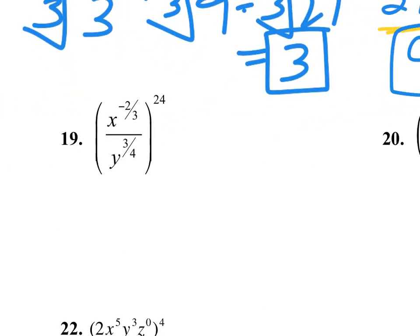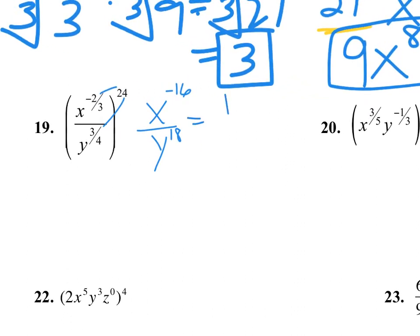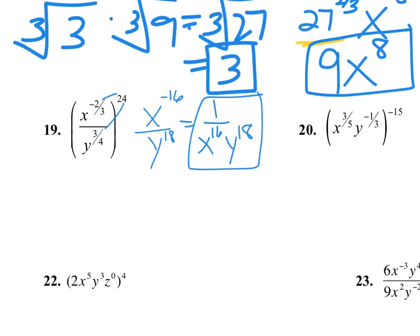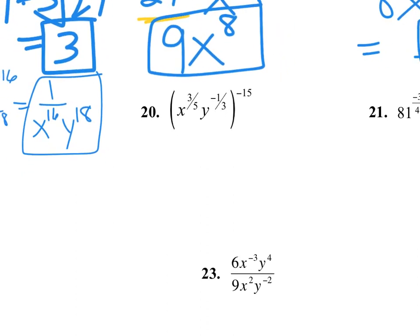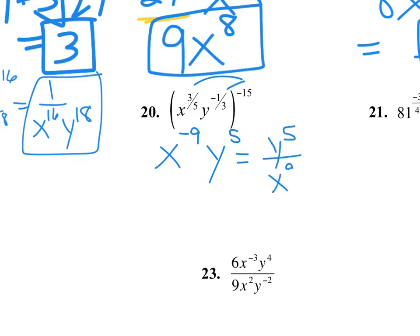Number 19: it's a power raised to a power, so we multiply. We get negative 16 on top and 18 on the bottom. 24 times 3/4 gives the exponent. Rewrite so there are no negative exponents in our answers. Number 20: everything is raised to the negative 15. x to the 3/5 times negative 15 gives us negative 9, and y to the 5th. x is unhappy with a negative exponent, y is not — y stays put, x moves to the bottom and becomes positive.